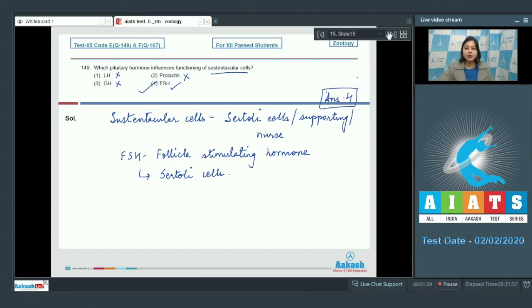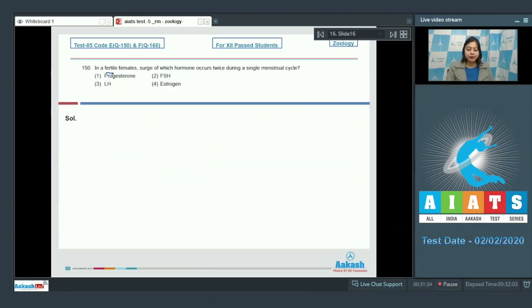Proceeding to the next question students. Question number 150. In fertile females, surge of which hormone occurs twice during a single menstrual cycle?